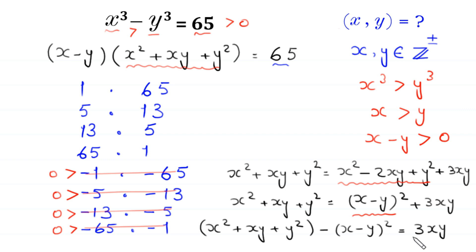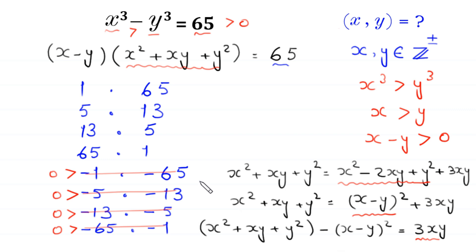Now, because the right-hand side is 3 times xy, the expression x squared plus xy plus y squared minus x minus y whole squared must be a multiple of 3 for integer solutions. So in these four remaining options, we check whether this number minus the square of the other number is a multiple of 3 or not.